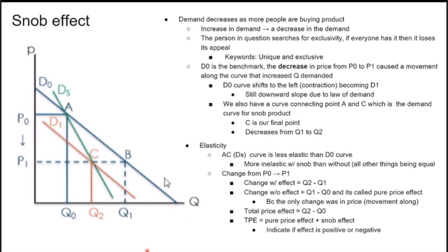The snob effect: demand actually decreases as more people buy the product. This is all about uniqueness — the person searches for exclusivity, and if everyone has it, it loses appeal. Keywords are 'unique' and 'exclusive.' A decrease in price from P0 to P1 causes a movement along the curve increasing quantity demanded, but the original curve shifts to the left (contracting to D1), still with a downward slope due to the law of demand. However, there is a decrease because of the externality effect. The elasticity formulas for the snob effect follow the same case scenario as for the bandwagon effect.